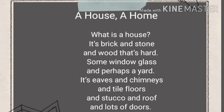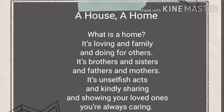A house is made of bricks, stone, and hardwoods. It has some glass windows and sometimes a yard. There are eaves, chimneys, and tile floors, as well as plastered walls, roofs, and many doors.